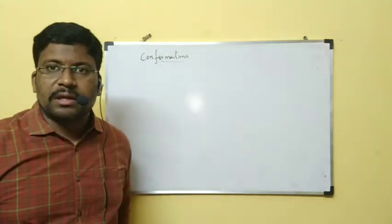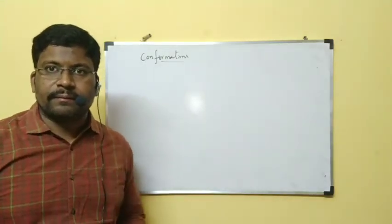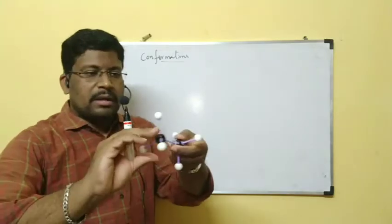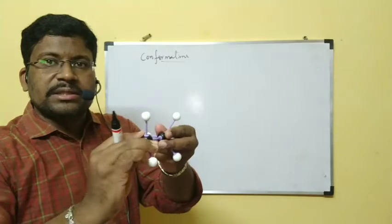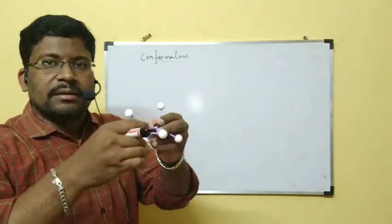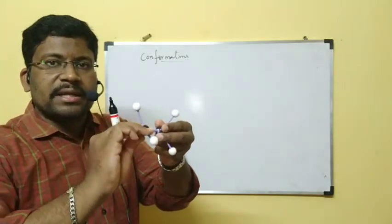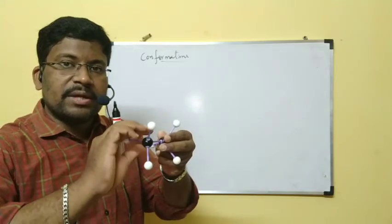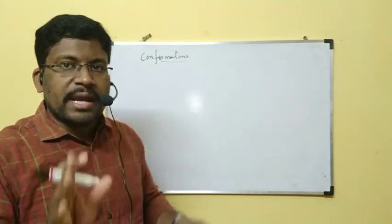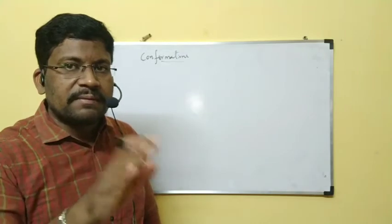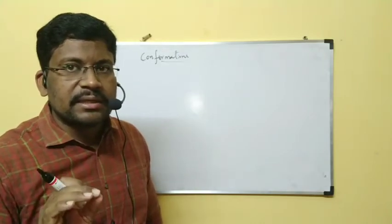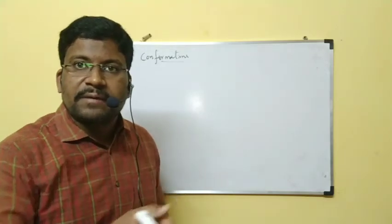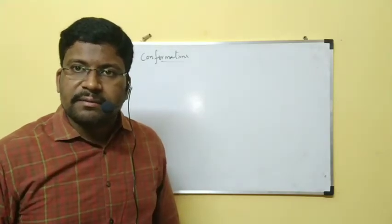Observe the board carefully. While eclipsed form is rotating and converting into staggered form — and staggered form converting to eclipsed form — staggered form will not convert to eclipsed form easily. We have to give energy; that energy will be absorbed and it converts to eclipsed form. Otherwise it won't, because it is stable.